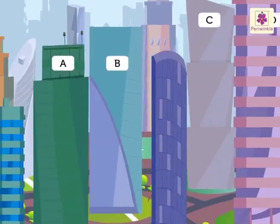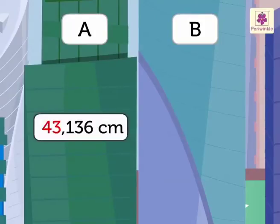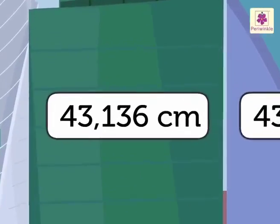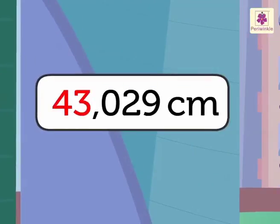First, let us compare the heights of skyscrapers A and B. The height of skyscraper A is 43,136 cm and the height of skyscraper B is 43,029 cm. Which is taller? Look at the numbers 43,136 and 43,029 on the skyscrapers.